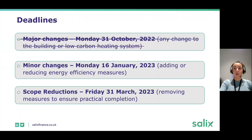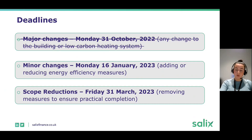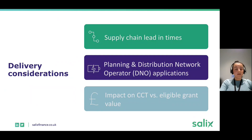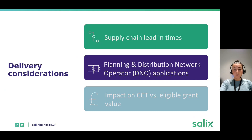To reiterate the deadlines: major changes are no longer accepted for single year projects. Minor changes, including adding or reducing energy efficiency measures, are accepted until Monday the 16th of January 2023. Scope reductions, including removing measures or sites, can be accepted until Friday the 31st of March 2023, the grant end date for single year projects. These deadlines exist because supply chain lead times have been exceptionally longer this year, and planning and DNO applications can take longer than anticipated — we want to ensure you can spend the grant by the grant end date.